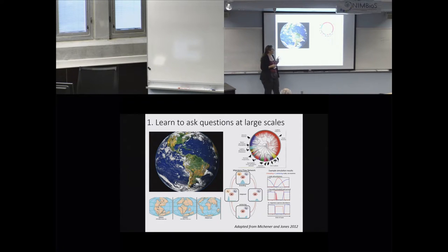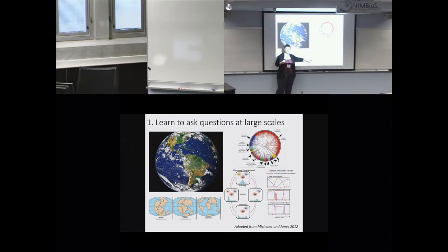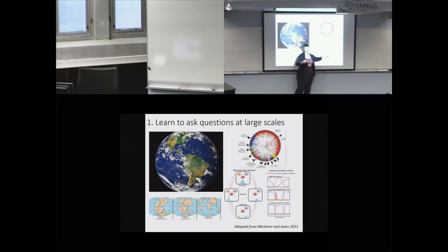This has a direct connection to this workshop: when asking questions at these scales, it's really important to start with a hypothesis — a specific question. Although data mining is very popular, it's dangerous with large datasets because you can find a lot of patterns. Starting with some type of model is really important. When thinking about very complex systems, these models are usually going to be framed in mathematical language with very specific predictions. The intersection between mathematics and data-intensive science is a really natural and should be a very strong one.